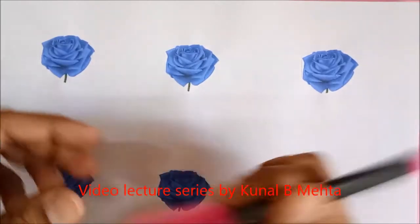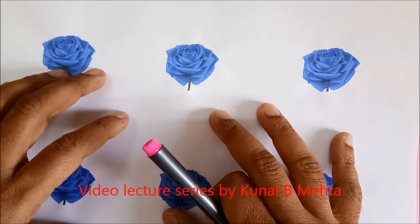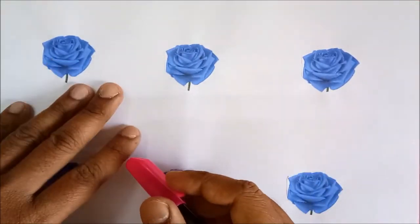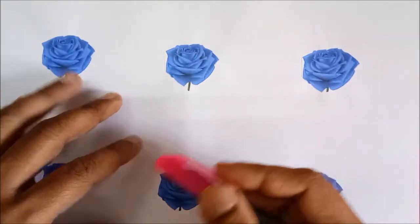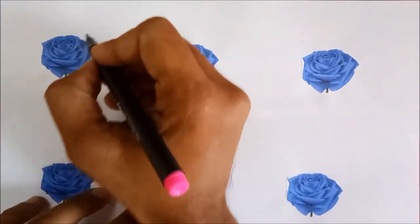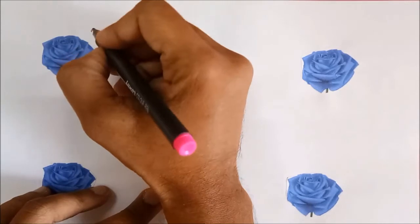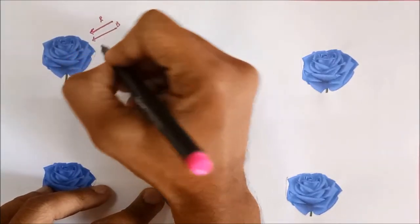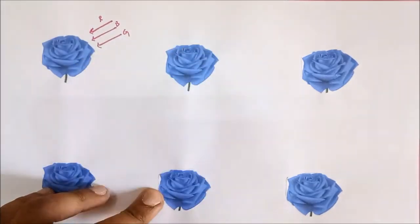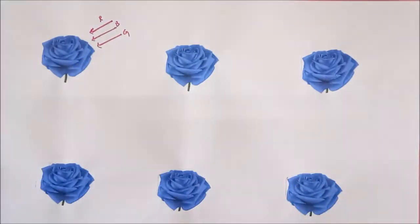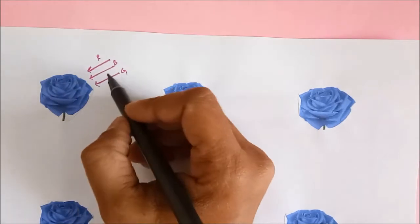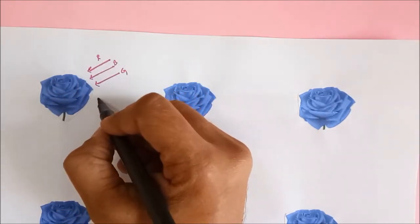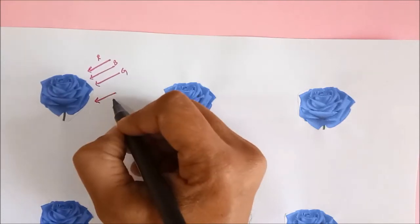Hello everyone, let us continue our discussion with the blue rose and try to understand its appearance in different colors. Let us assume we incident white light, which is red, blue, and green, and also consider what happens when we incident only blue light.